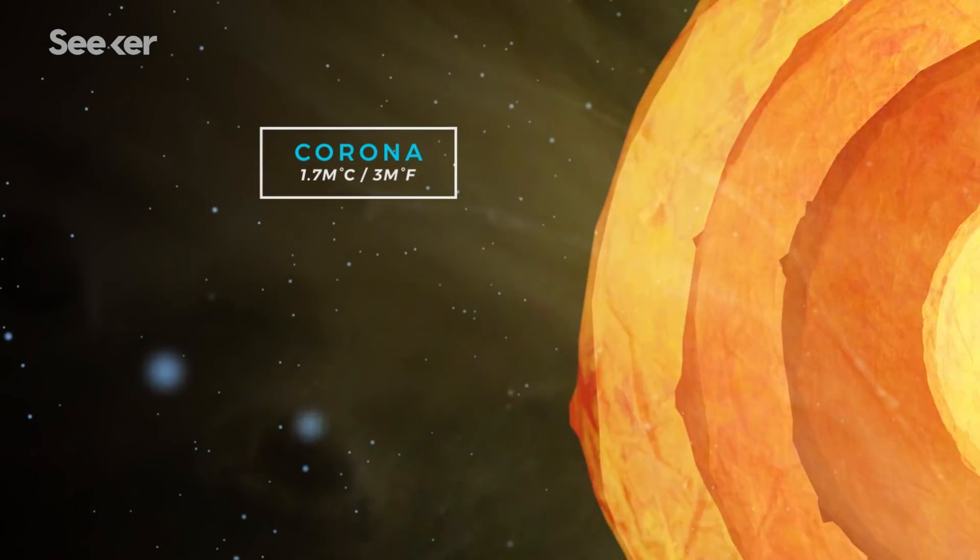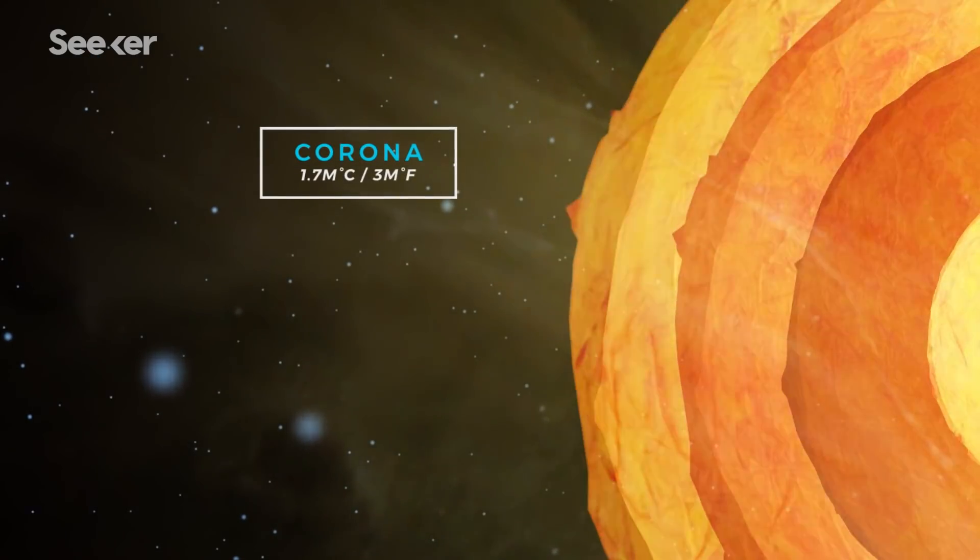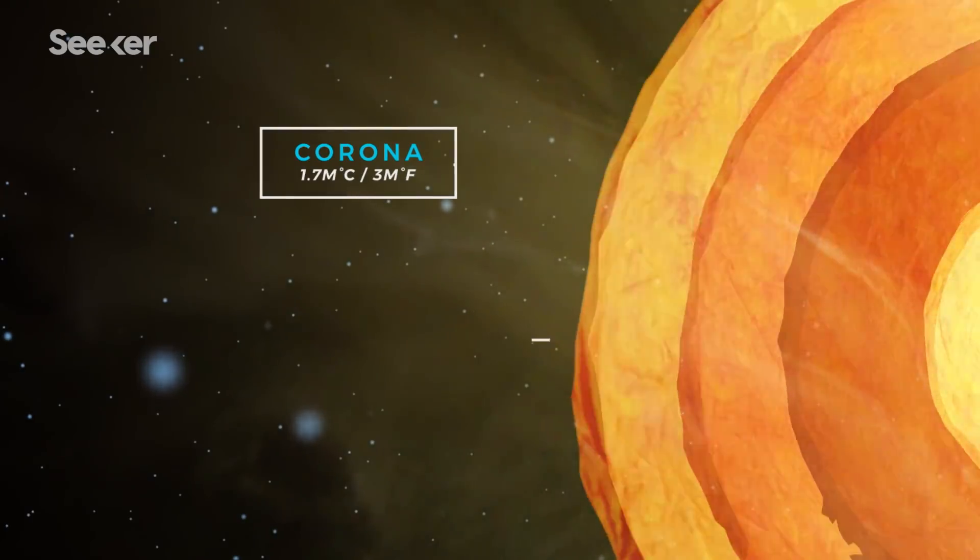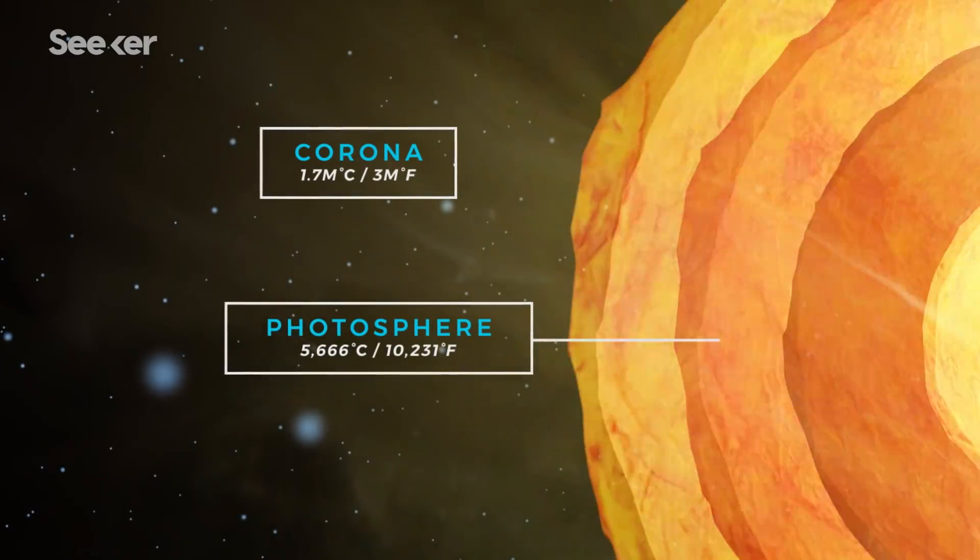Here, temperatures can rise to over 1 million degrees Celsius, which is about 300 times hotter than the photosphere, the lowest layer of the Sun's atmosphere.